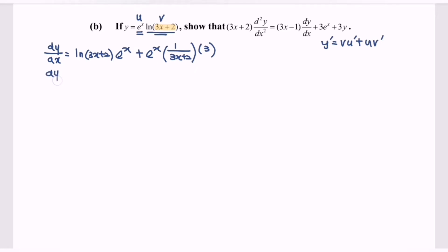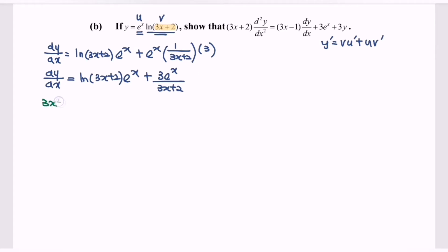So dy/dx equals ln(3x plus 2) times eˣ, plus 3eˣ over (3x plus 2). We can rewrite this: multiply both sides by (3x plus 2), and we notice that eˣ times ln(3x plus 2) is actually equal to y. So (3x plus 2) times dy/dx equals (3x plus 2) times y plus 3eˣ.